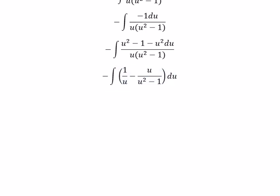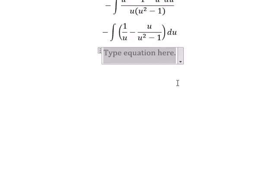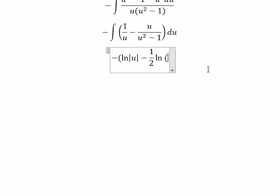Now we can get the final answer. The integral of one over u equals ln of the absolute value of u. The integral of u over u squared minus one equals negative one over two ln of u squared minus one.